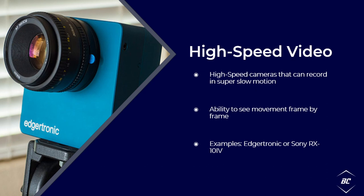Lastly, a high-speed video camera is a camera that can record past a thousand frames per second and shoots in super slow motion. It gives you the ability to see movement frame by frame, and can be used for hitters and pitchers alike to see things that can't be seen with the naked eye.